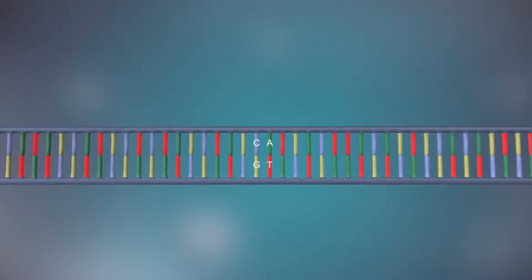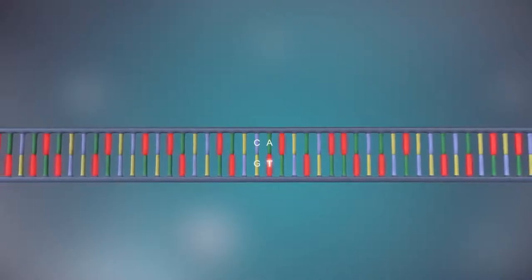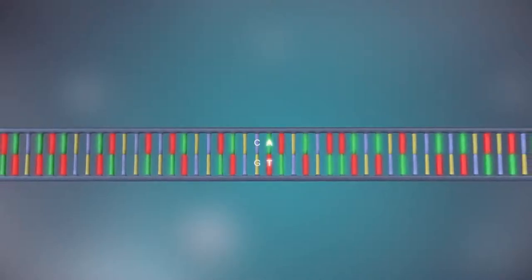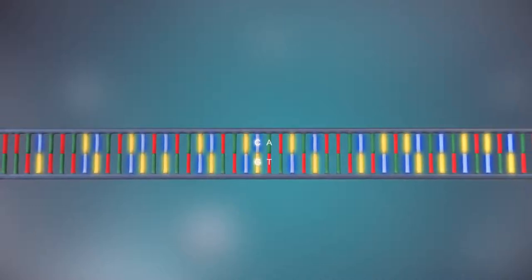The two strands are complementary. This means that wherever there's a T in one strand there will be an A in the opposite strand, and wherever there's a C there will be a G in the other strand.